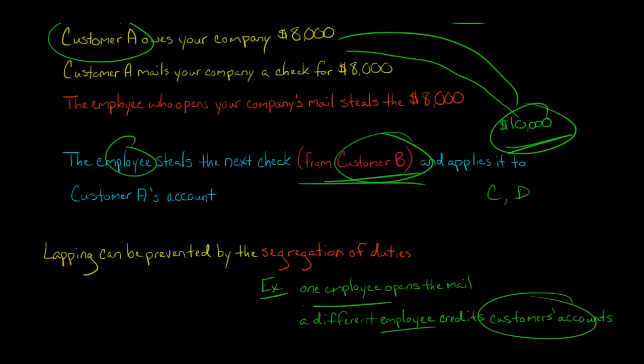Then one person cannot commit this lapping scheme. That's not to say you couldn't still have this fraud going on. You would need collusion, right? If this employee and this employee were working together, we call that collusion, multiple employees, then you could still have the fraud. But when you segregate the duties and one person is not able to perform all those different functions, you have different employees doing different things, you prevent one person from being able to commit this lapping scheme.